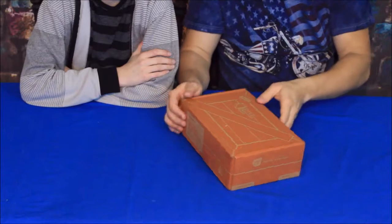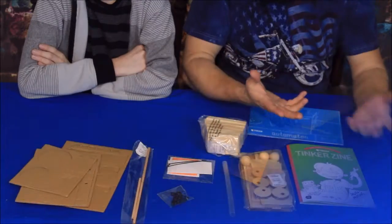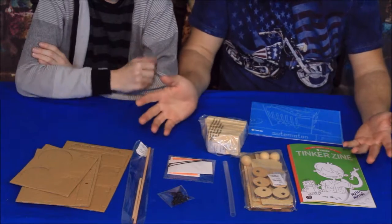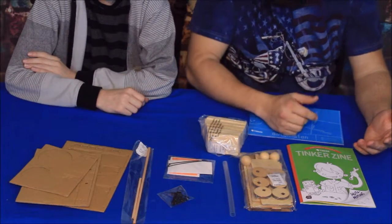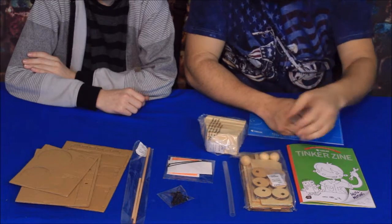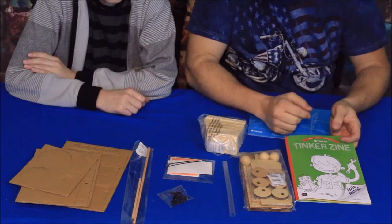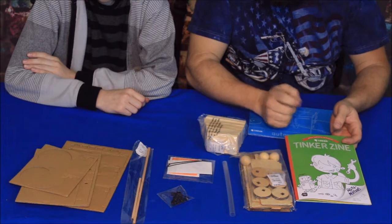So let's go ahead and get this opened up and see what's inside and then we'll get to building. All right everybody, well here we go. We've got quite a few pieces this time. There's actually a lot of wood pieces in this one, more than I've ever seen in any one of the tinker crates before. So I think we're going to be building this and it's probably going to take us a little while to do it.